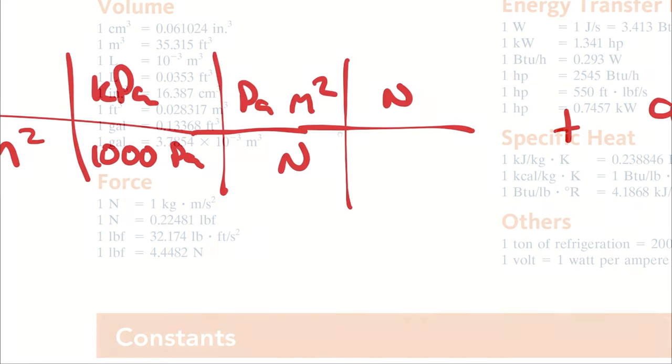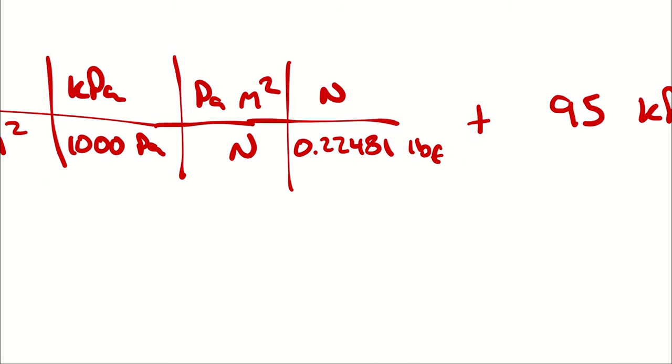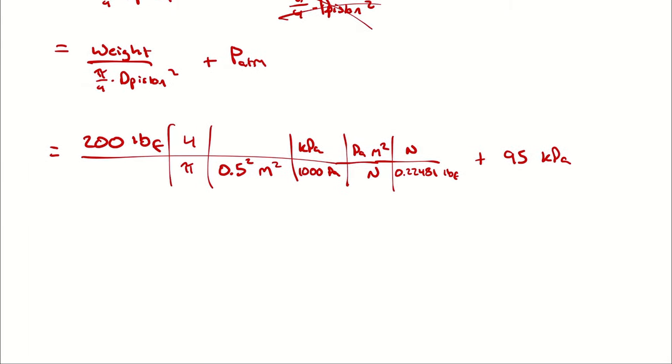0.22481. Generally speaking, I don't like to write decimals because I have a habit of misreading my handwriting when I do. I'm sure that won't ever happen in one of these example problems. Pound force cancels pound force. Newton cancels newtons. Pascals cancels pascals. Square meters cancels square meters. Leaving me with kilopascals. A kilopascal plus a kilopascal will yield an answer in kilopascals. So, let's do this.